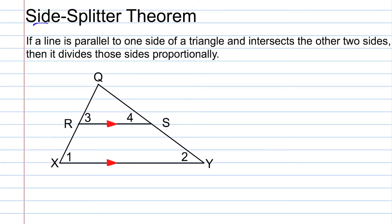Here we have the side splitter theorem. If a line is parallel to one side of a triangle and intersects the other two sides, then it divides those sides proportionally. We've been working with proportions within similar triangles, and in this case we have a triangle embedded inside another triangle. On this side, we can see that RS is marked parallel to XY.